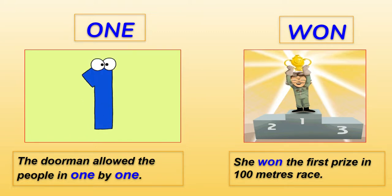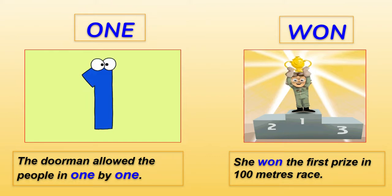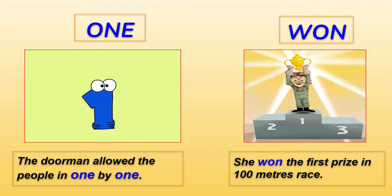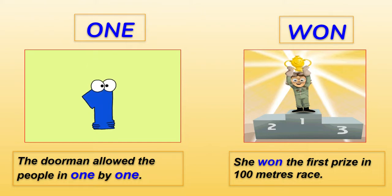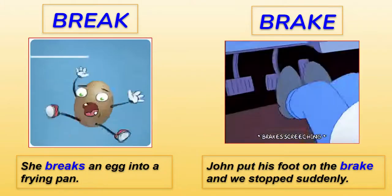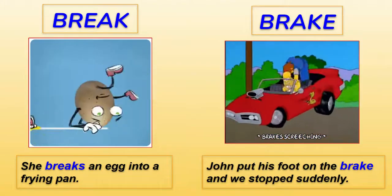Now 'one' and 'won.' O-N-E is the number one — a digit. W-O-N is the past tense of win — 'I've won the race! I've won the shield!' So you're happy because you've won the race. O-N-E is the number, and W-O-N is the past tense of win.